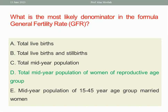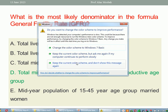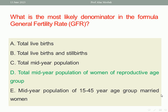The answer is D: Total Mid-Year Population of Women of Reproductive Age Group. Somebody may be confused with D and E. The difference is D is talking about mid-year population of women of reproductive age group, while E is the same age group — 15 to 45 — but for married women. The correct answer includes women regardless of marital status.